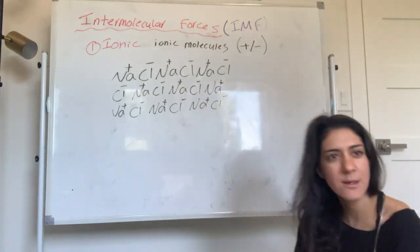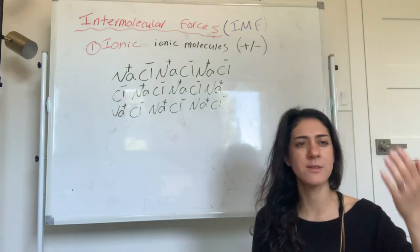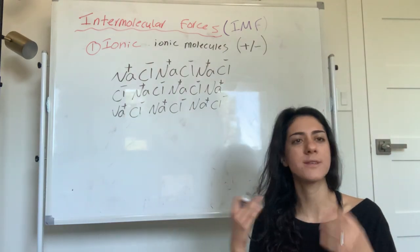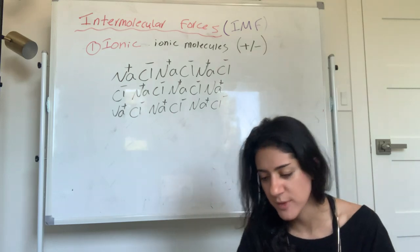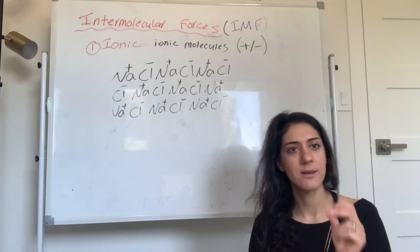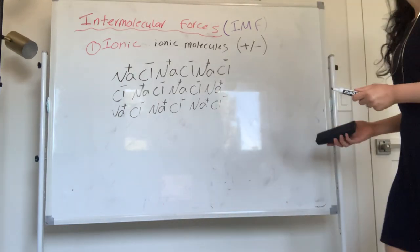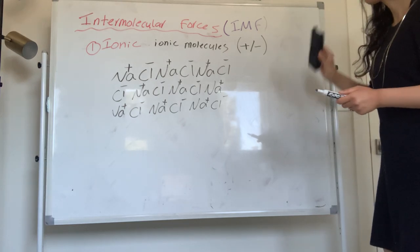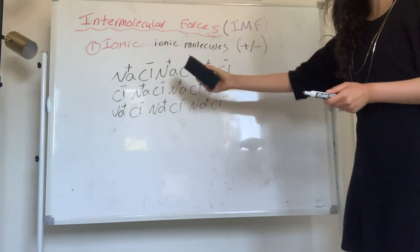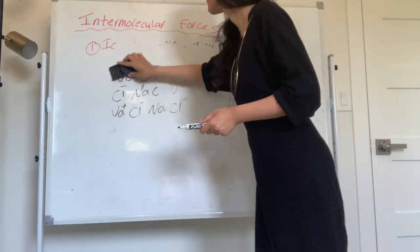Next time you have sea salt, think: there are millions and millions of molecules in here, held together through plus-minus attraction. Ionic interaction is for ionic molecules, and it is an attraction of plus and minus charges.